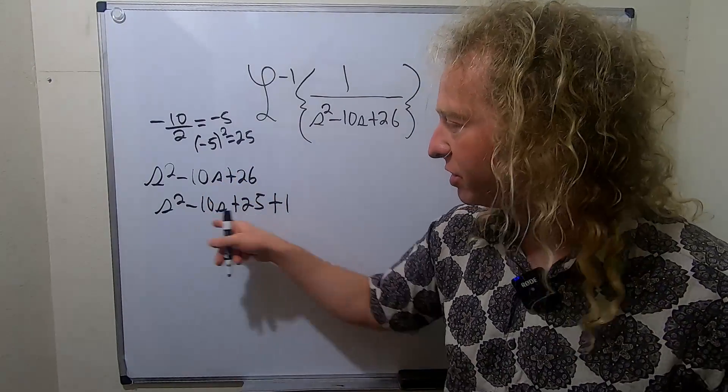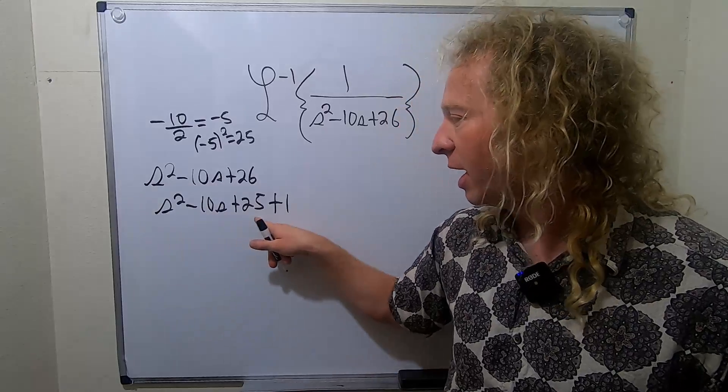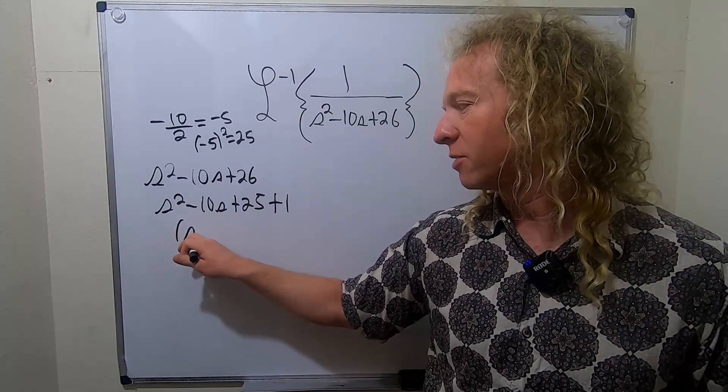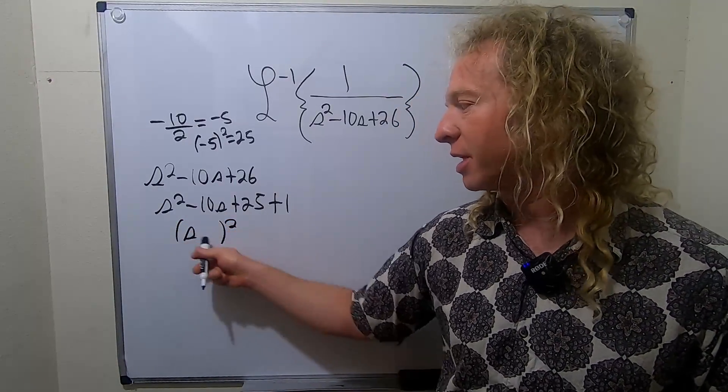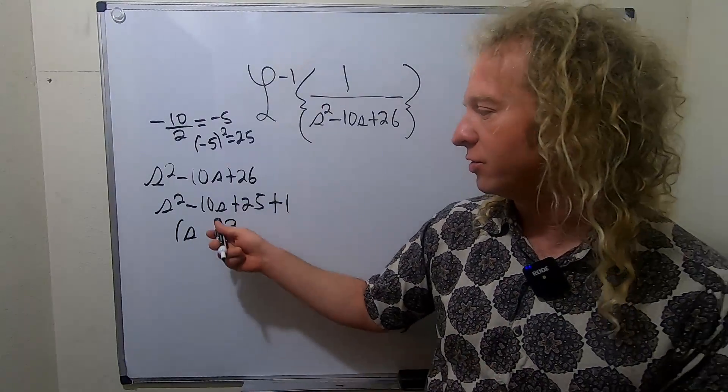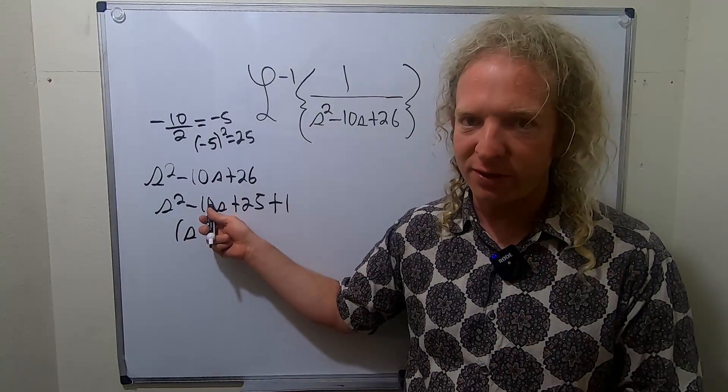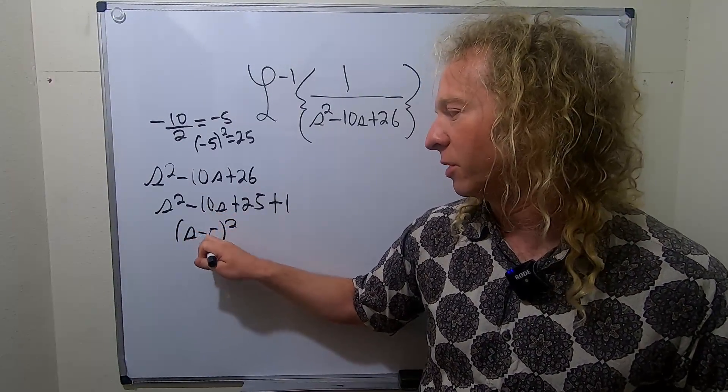So now this factors. This thing here is called a perfect square trinomial. So it always factors. And I just know it looks like that. I have it memorized. And I know that you just always divide by 2. So divide by 2, and you get negative 5. Boom, there it is. Beautiful stuff.